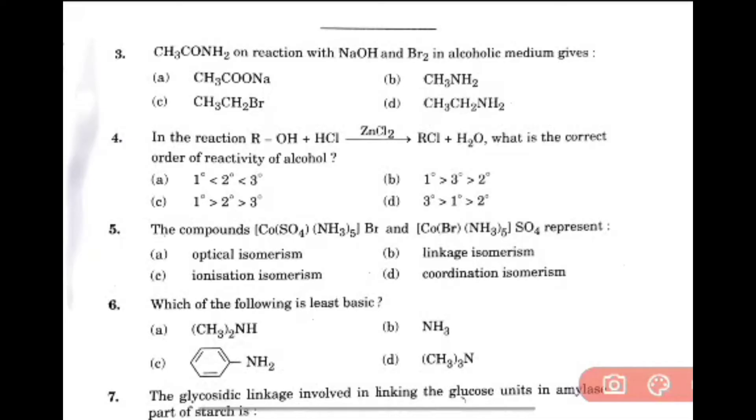CH3CONH2 reaction with NaOH and Br2 in alcoholic medium gives, that is option B, CH3NH2. ROH plus HCl gives RCl plus H2O. What is the correct order of reactivity of alcohol? That is option A.